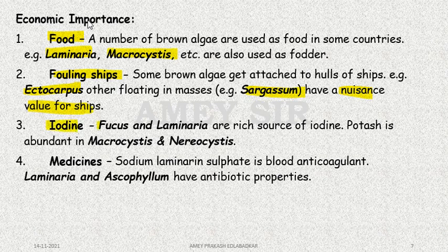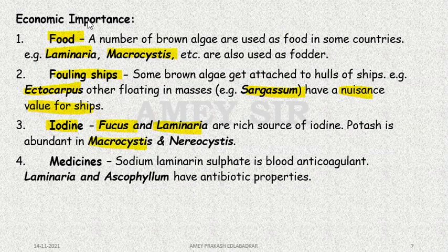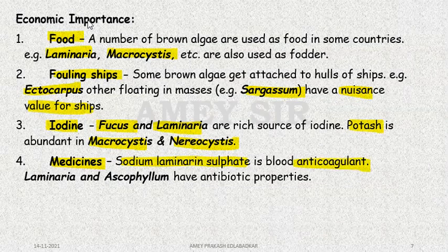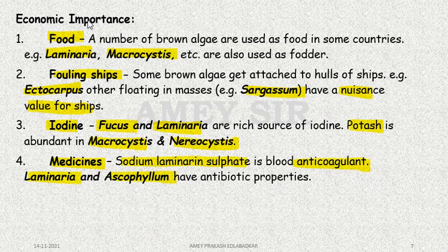Iodine is sourced from Fucus and Laminaria. Bromine is also obtained from them. Potash is obtained from Macrocystis and Nereocystis. From a medicinal perspective, sodium laminarium sulfate is used as an anticoagulant. Laminaria and Ascophyllum also have antibiotic properties.